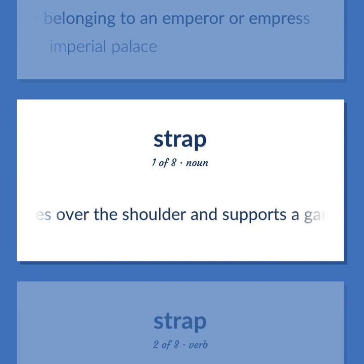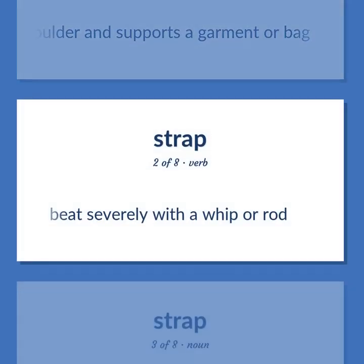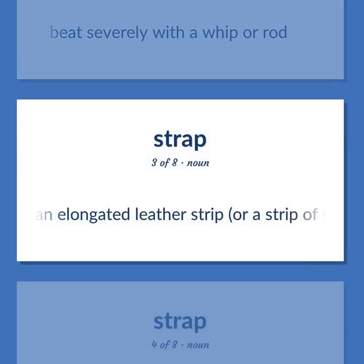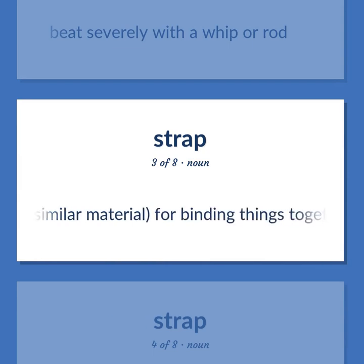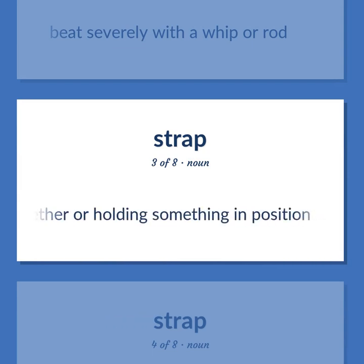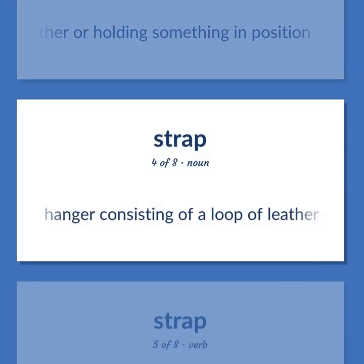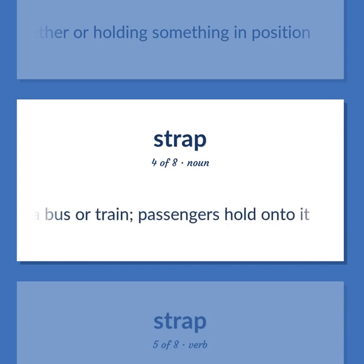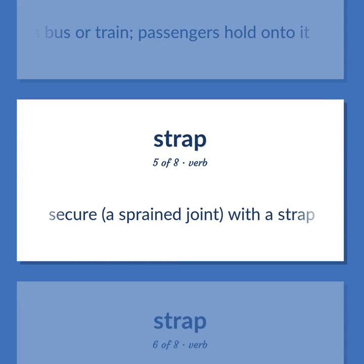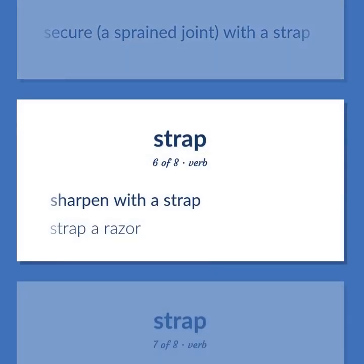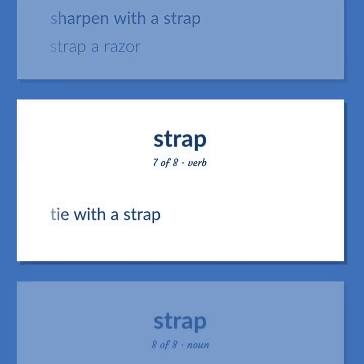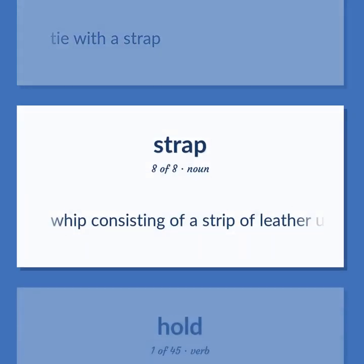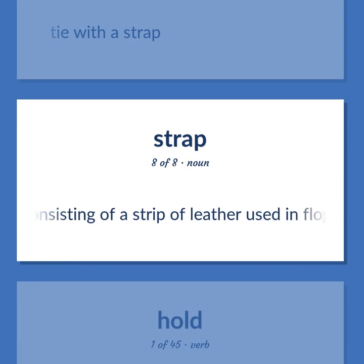A band that goes over the shoulder and supports a garment or bag. Beat severely with a whip or rod. An elongated leather strip, or a strip of similar material, for binding things together or holding something in position. A hanger consisting of a loop of leather suspended from the ceiling of a bus or train — passengers hold onto it. Secure a sprained joint with a strap; sharpen with a strap. Tie with a strap. A whip consisting of a strip of leather used in flogging.